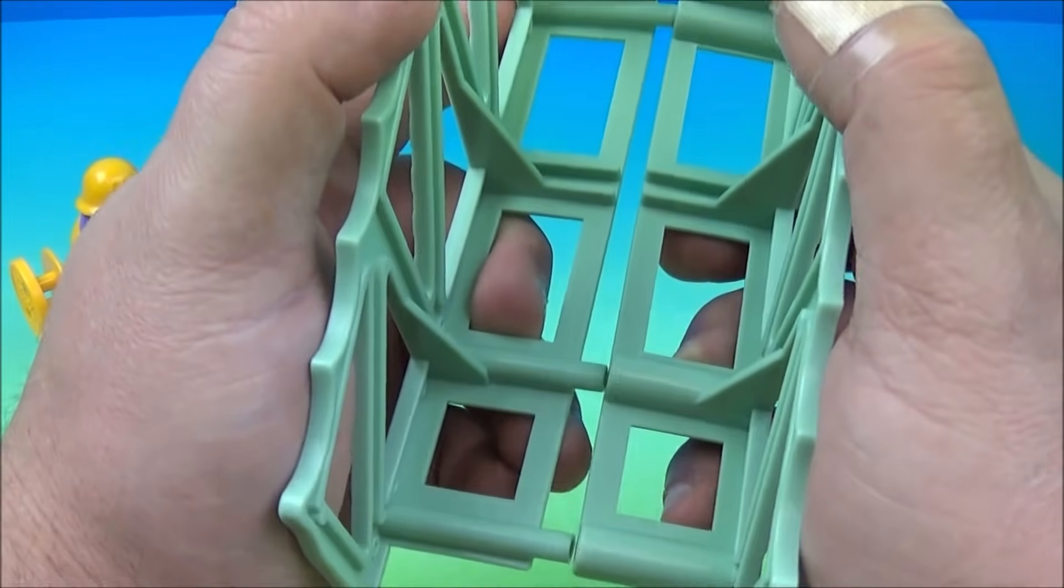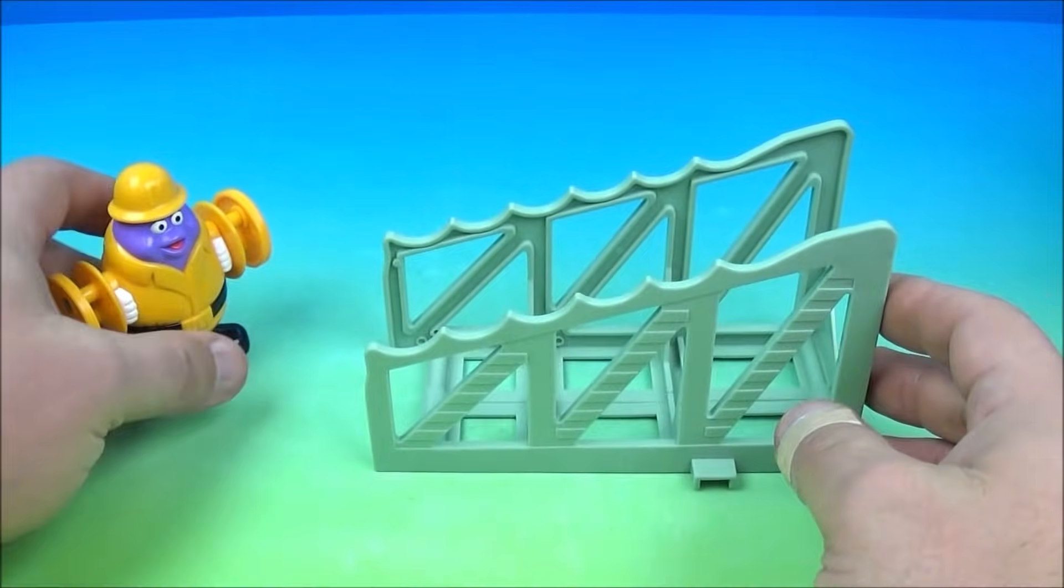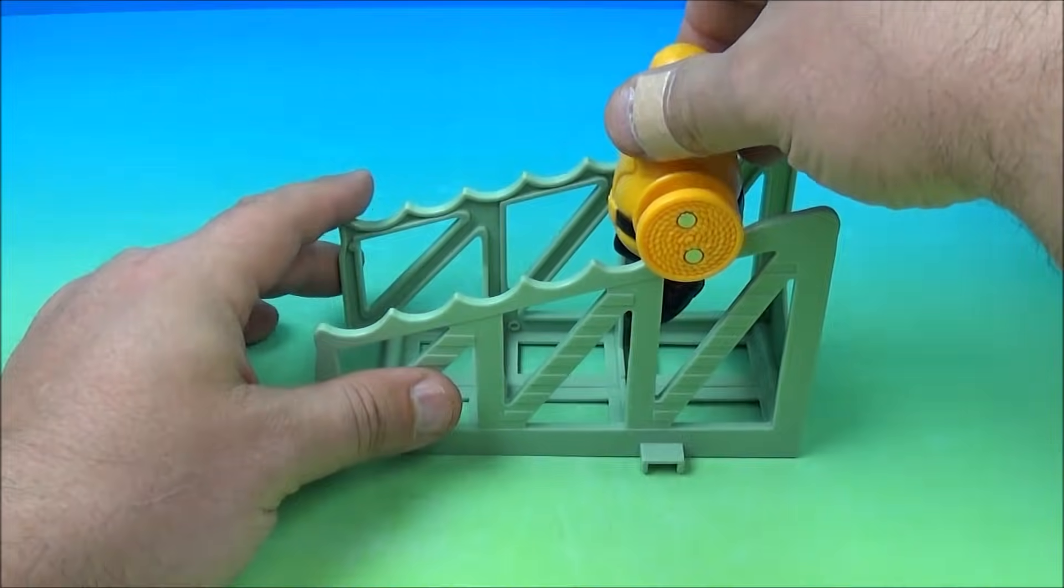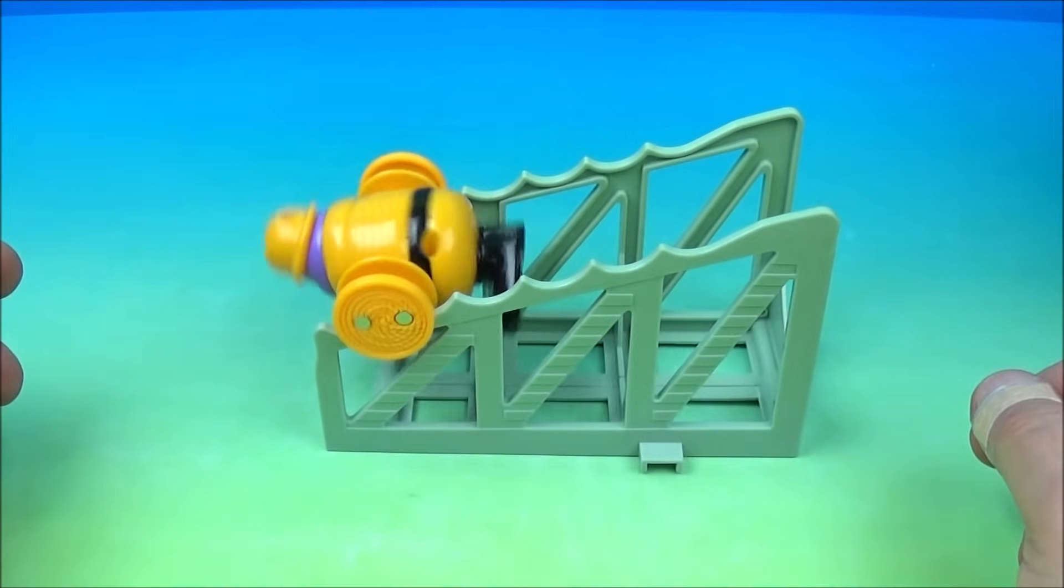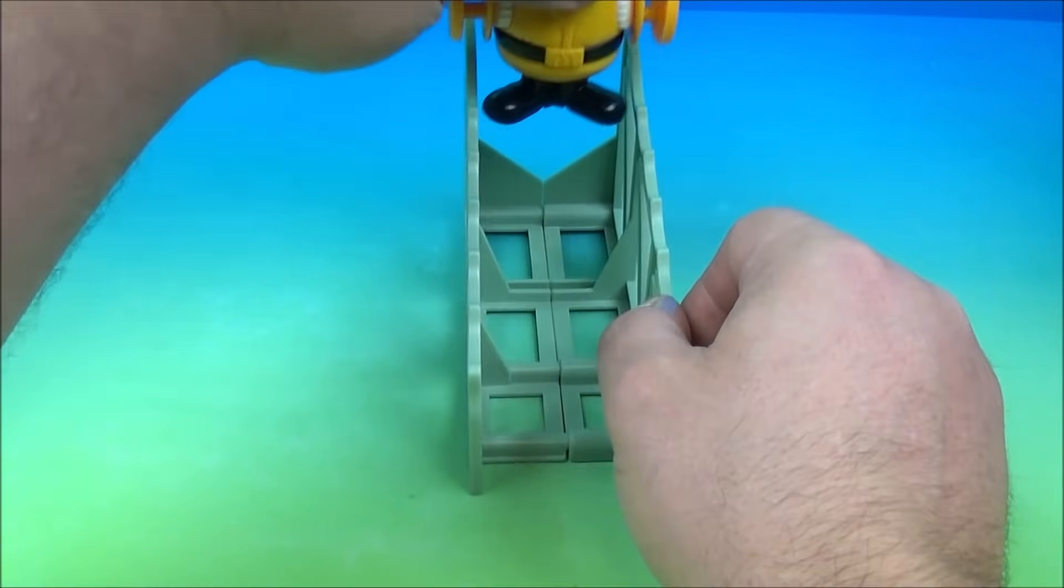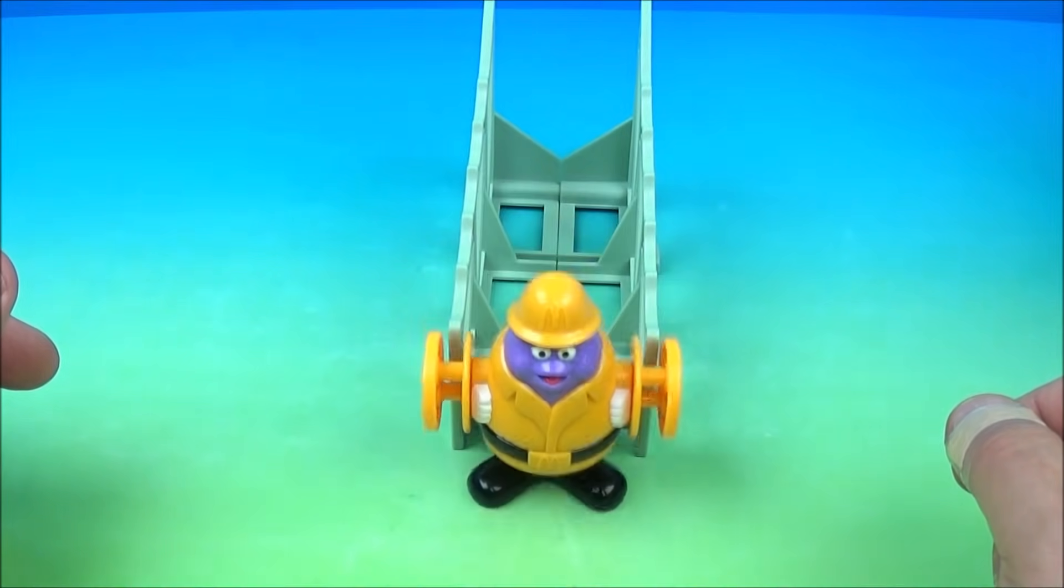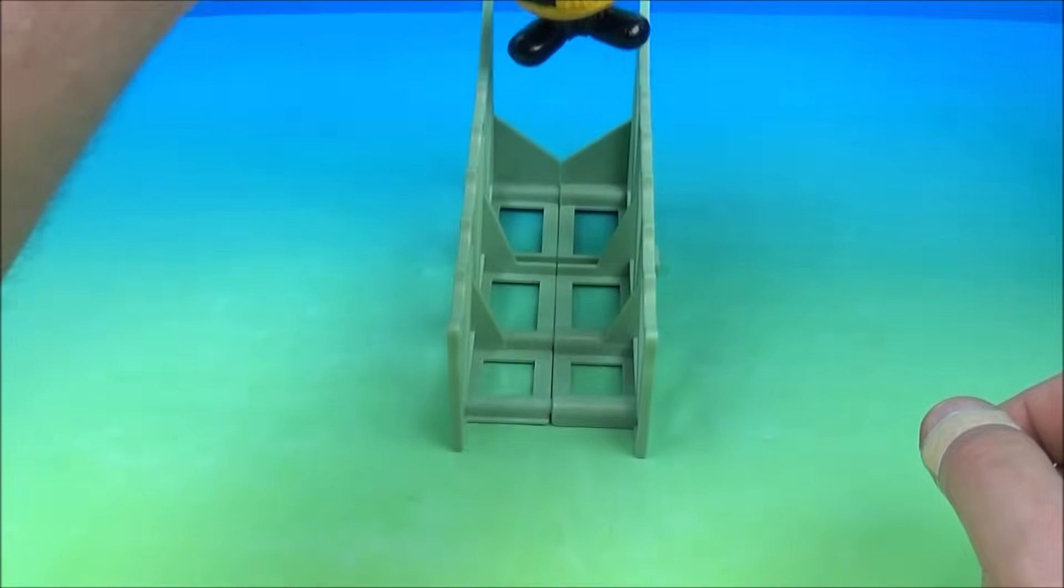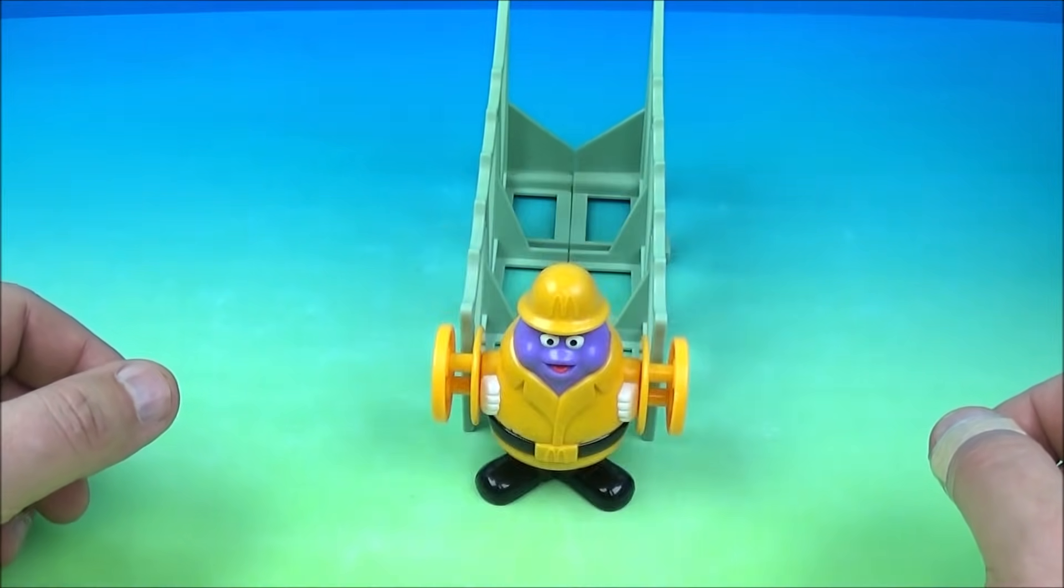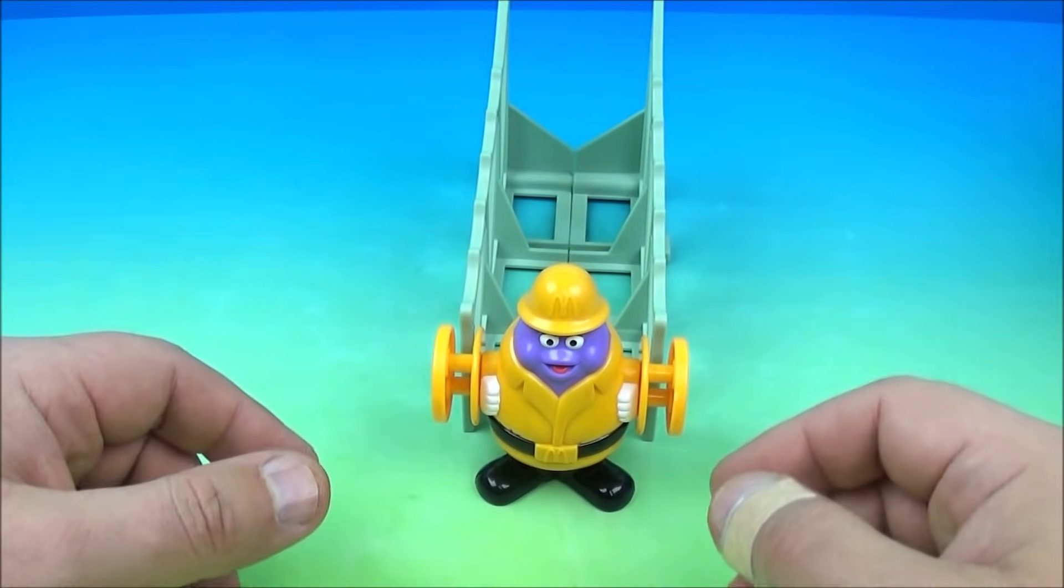And then you take Grimace and you set them on here like so and let them go. And look at that. Let's do it this way so you can see what happens when he falls. And look at that, he stands up on both his feet. That's so cool. One more time. So simple yet so much fun. So there you go, it's Grimace Hefty Roller.